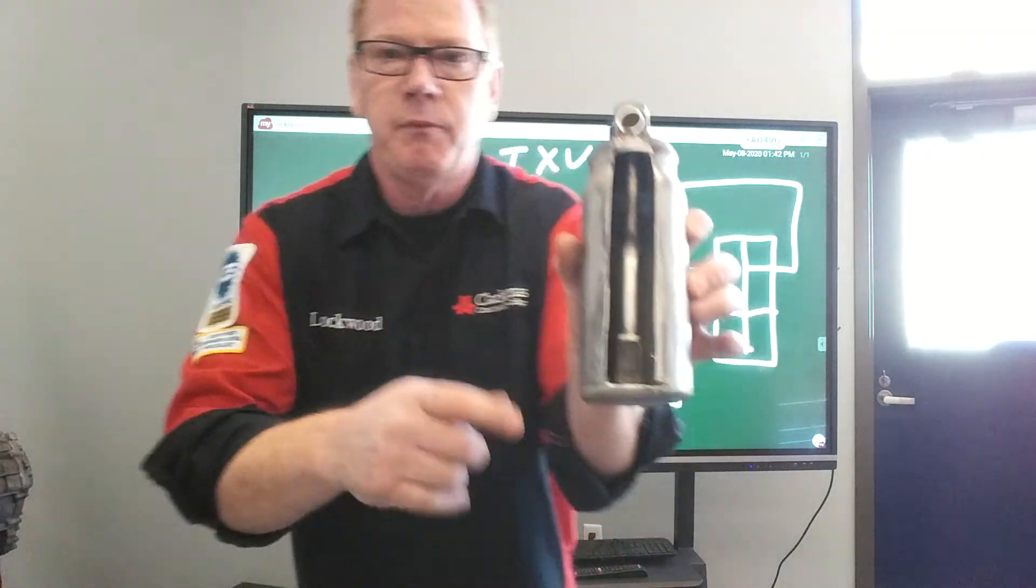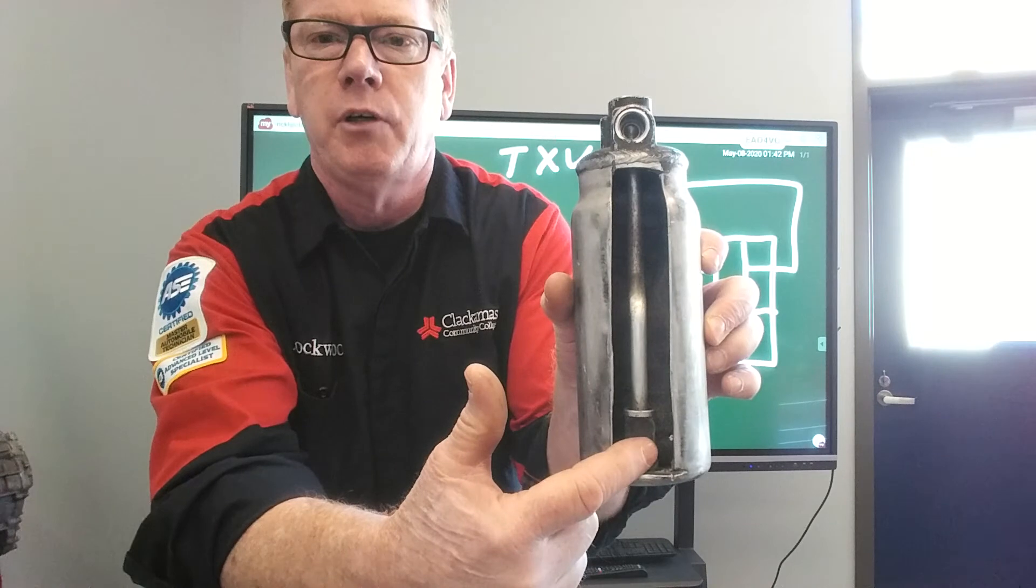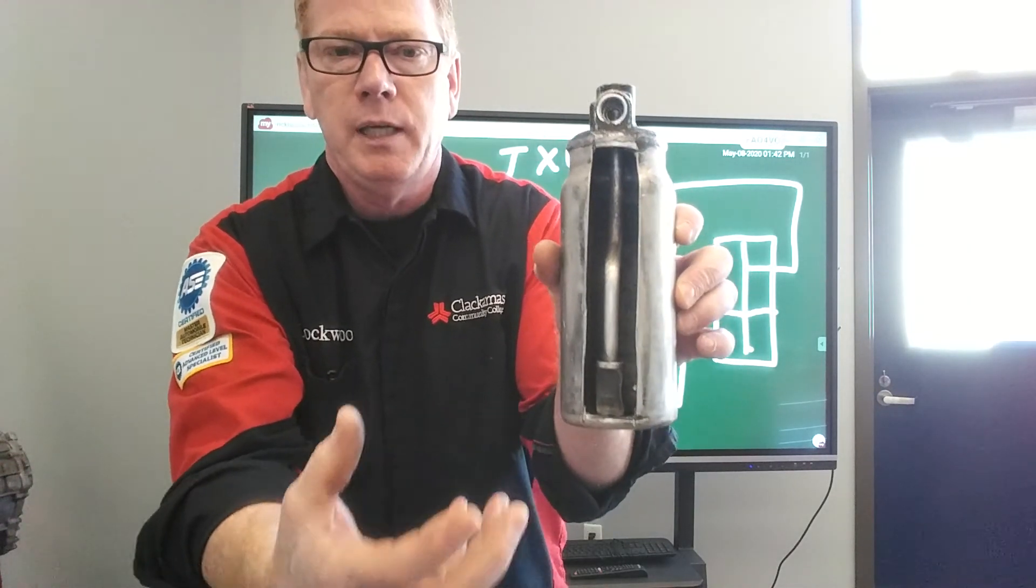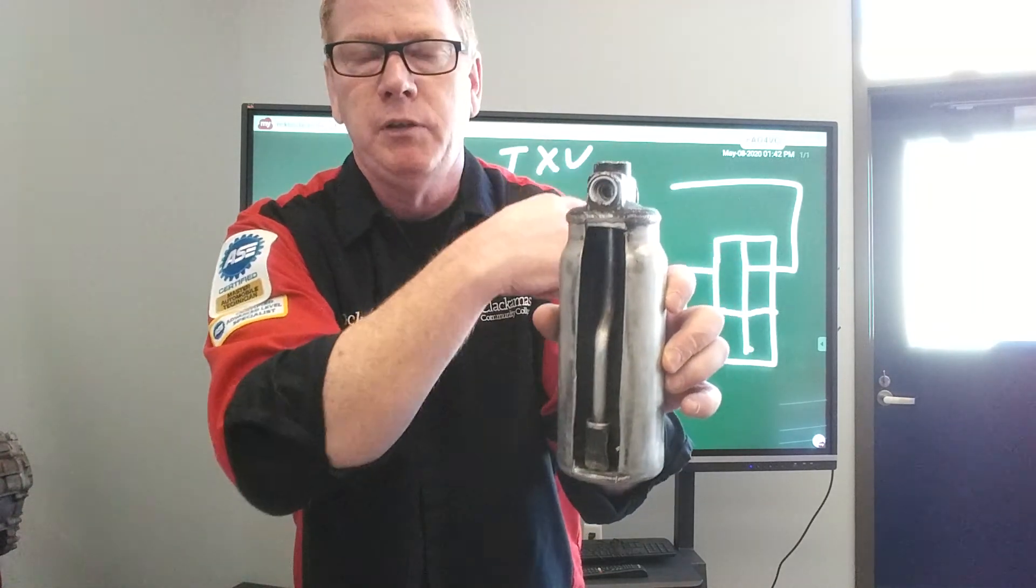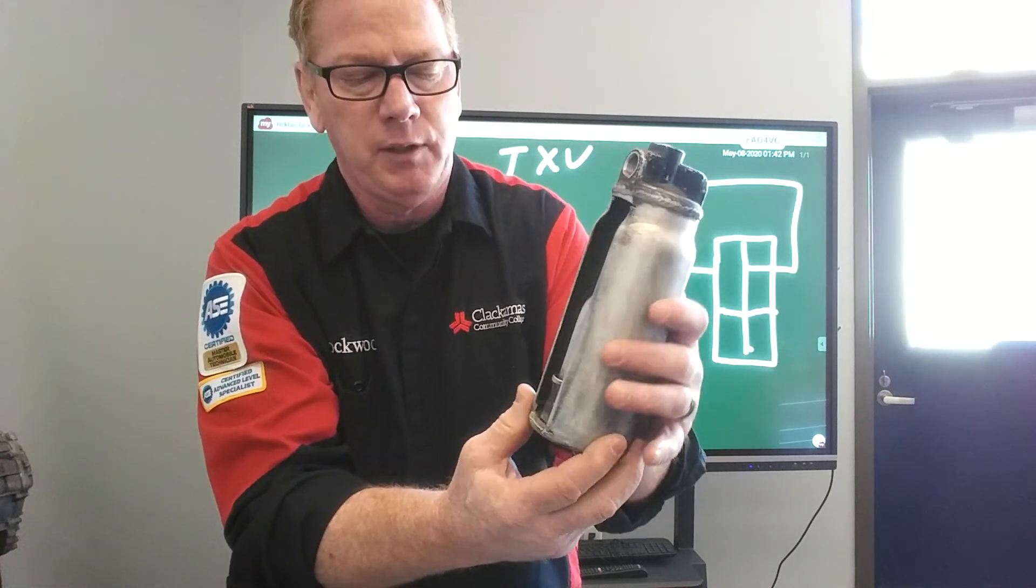So inside of here, if you can see that, there is a screen. Once again, we are drawing liquid refrigerant, and there should be AC refrigerant oil within that, so we keep the oil moving through the system this way, other than what's the design of an accumulator.